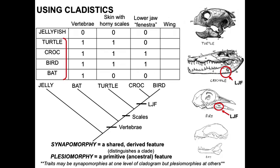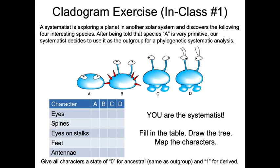Now this is a pretty simple tree, and I have an activity for you to do where we're going to play systematist. We've got four different creatures that you have gone out and discovered, with various characters that you can see looking at them. You are the systematist — you can work together on this and work through how you would do this, figuring out what your character states are going to be.